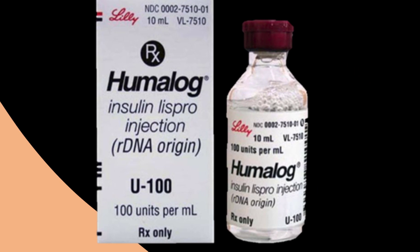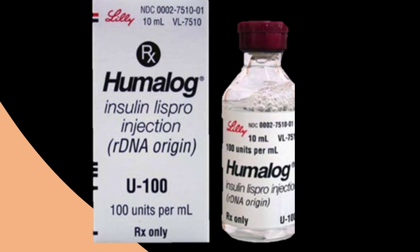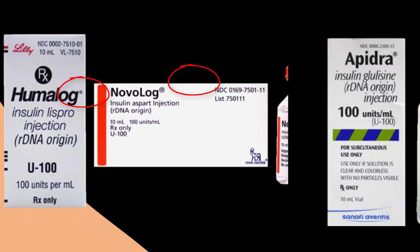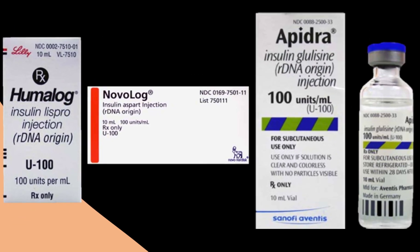Types of rapid-acting insulin include insulin lispro, known as Humalog, and insulin aspart, known as NovoLog — as you can see, both end with 'log' — and insulin glulisine, known as Apidra.